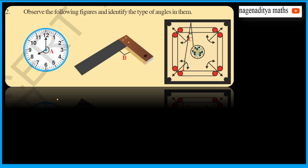Observe the following figure and identify the type of angle. The first one is a reflex angle — paravartan konam. So the first one is a reflex angle.